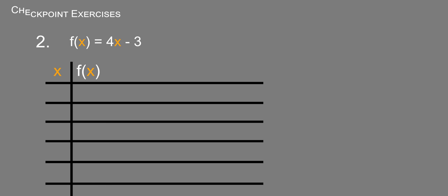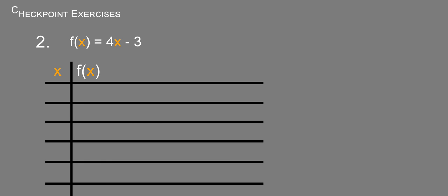So we're told to find the value of the dependent variable given x equals negative 2, negative 1, 0, 1, and 2. We'll go ahead and extend this out so we can do this in a table just like we were told to. f of x equals 4x minus 3.